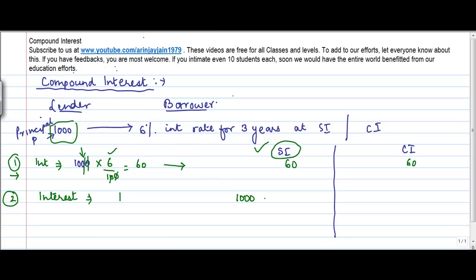So again, just like you did in the first year, you multiply this by 6 divided by 100 and your interest comes to 60.